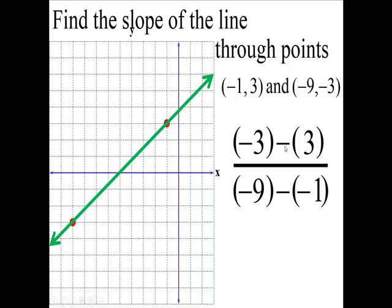So negative 3 and negative 3 makes negative 6, and this is negative 9 minus a negative 1. So that's negative 9 plus 1. If you owe $9 and you pay back $1, you still owe $8.